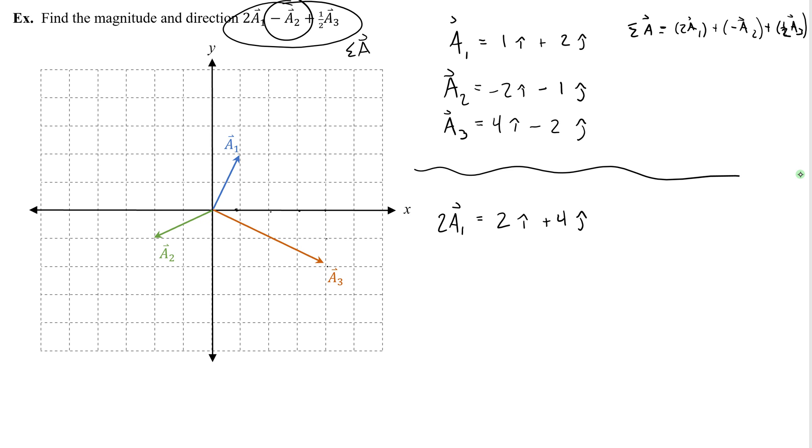Negative a2, well, if I reverse the x and y components, or the i and j components, then I'm going to get negative a2. Because again, it's almost like multiplying this by negative 1. So positive 2i plus 1j. For a3, if I want to do 1 half of a3, I apply the 1 half to the 4 and the 2, and I'll get 2i minus 1j.